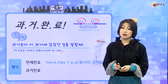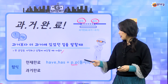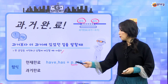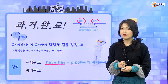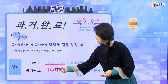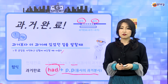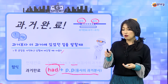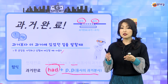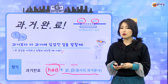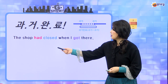과거 완료는 어떤 기본 형식을 갖고 있을까요? PP는 변하지 않아요. 현재 완료에서 have나 has 부분이 과거 완료로 바뀌어야 하는데, had로 바뀌어서 뒤에 동사의 과거 분사는 똑같은 거예요. 어떤 문장에서 had PP가 보이면 과거 완료이고, has나 have가 있으면 현재 완료예요.